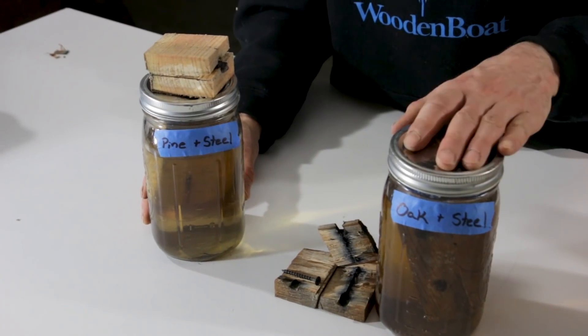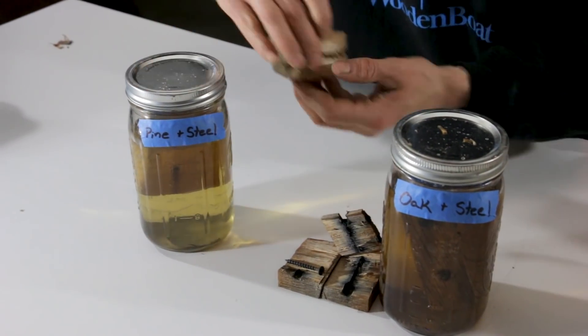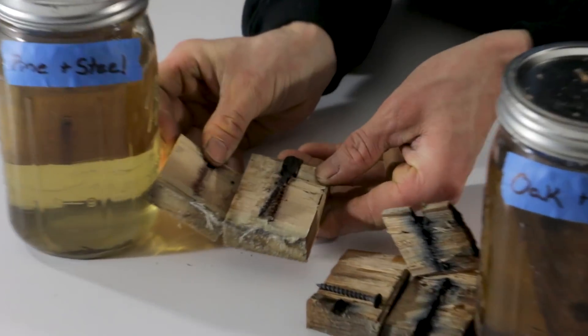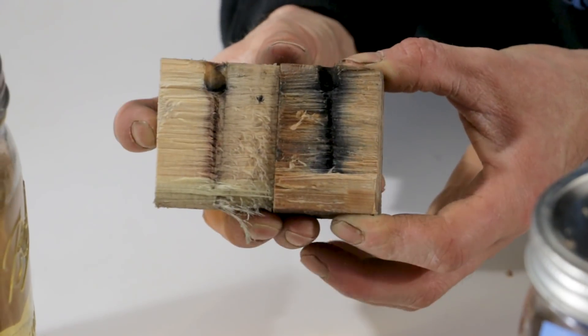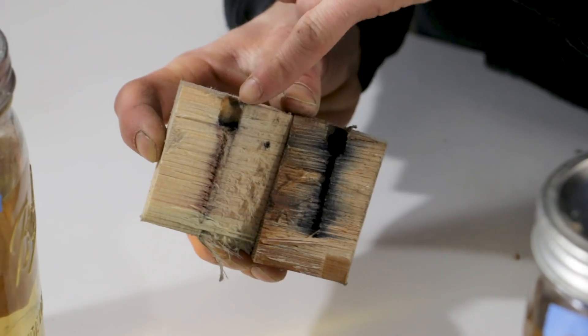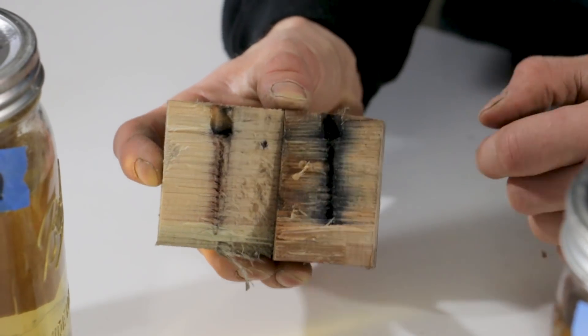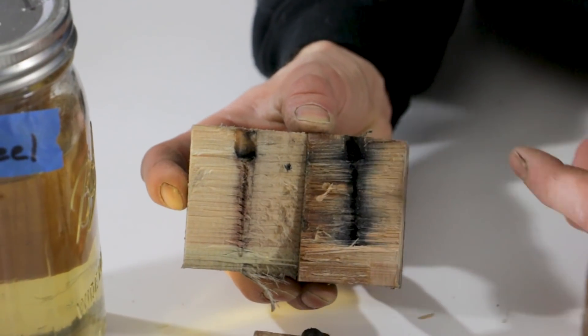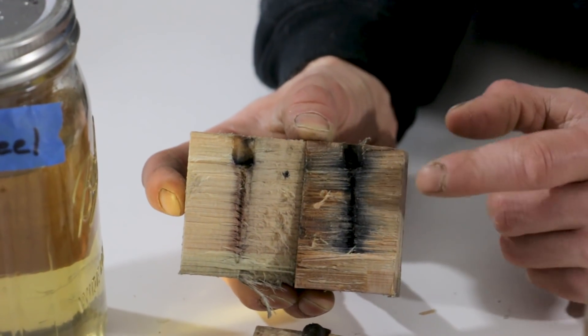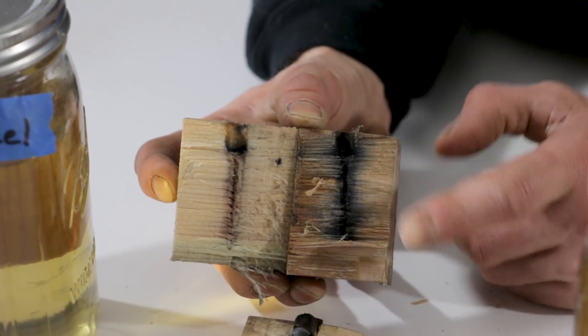Now if we compare the oak and the steel to pine and steel, we get a very different picture. So you can see in the pine, it's still leaked at the bung, it's still got some corrosion on the screw, but not nearly as much corrosion, not nearly as much streaking. And that's because of the tannins in the oak that are interacting with the screw.